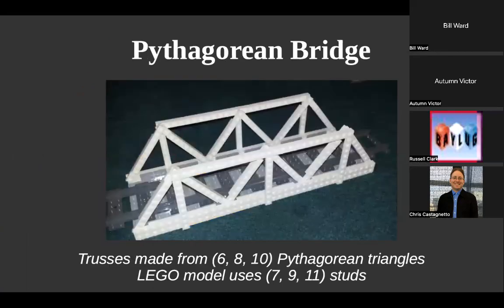Here's an example of a bridge based around the 6-8-10 triangle — actually 7-9-11 with the +1 rule. If you look carefully, the walls of that bridge are four or five plates thick, but because each individual piece is only one or two plates thick, it doesn't look as thick as it actually is. All I've done is doubled the 3-4-5 dimensions in each direction and built plates of the appropriate lengths: 7, 9, and 11 in this case.